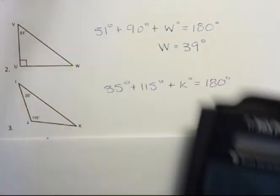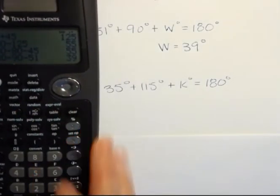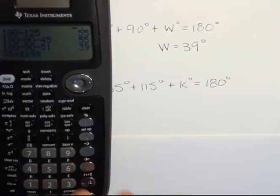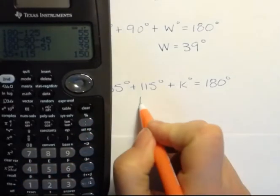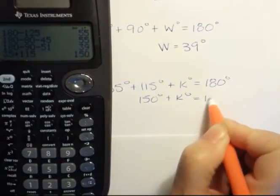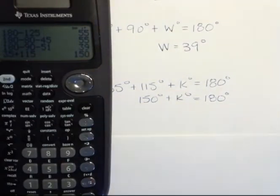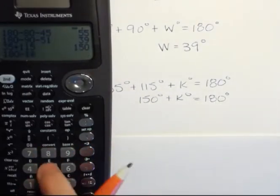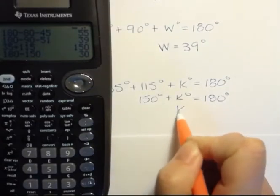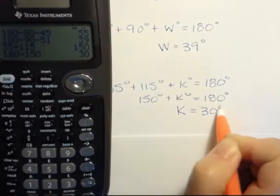Notice I'm putting the degrees on there because we should use units when possible. In this case, I'm going to do the other method. 35 plus 115 is 150. And I can just look at that and go, well, 150 plus 30 would be 180, right? But maybe you don't see that. So you go 180 minus the 150 that you were looking for. And that's going to mean that K is actually 30 degrees.